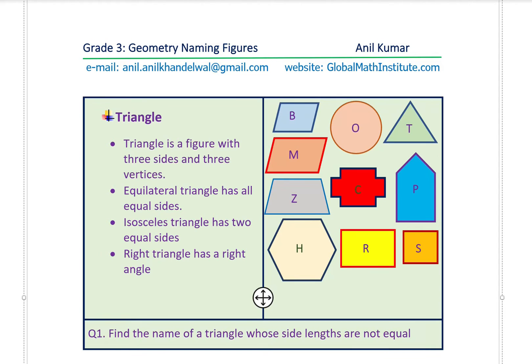Let's start with understanding what a triangle is. A triangle is a figure with three sides and three vertices. We have a previous video which talks about the description and attributes for figures — we are going to use those attributes here. So, triangle is a figure with three sides and three vertices. Can you figure out which one of these ten is a triangle?